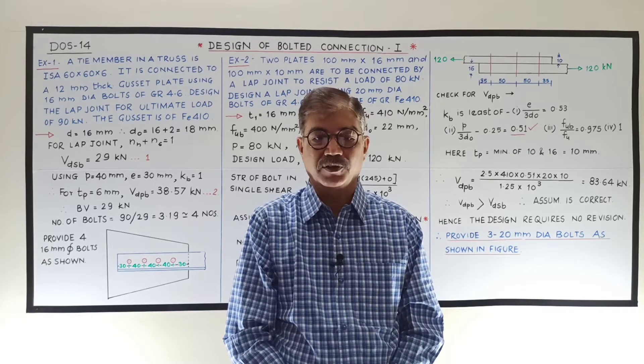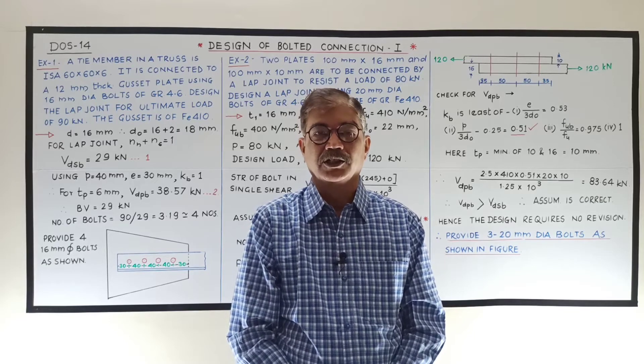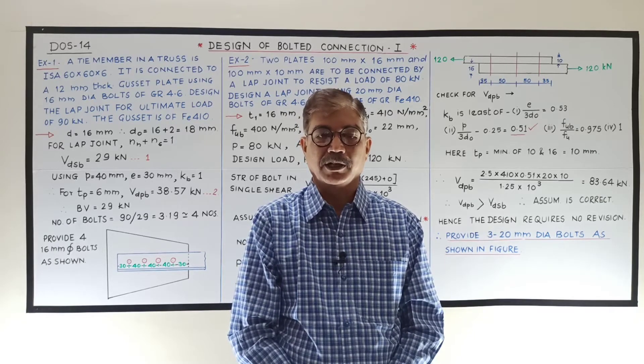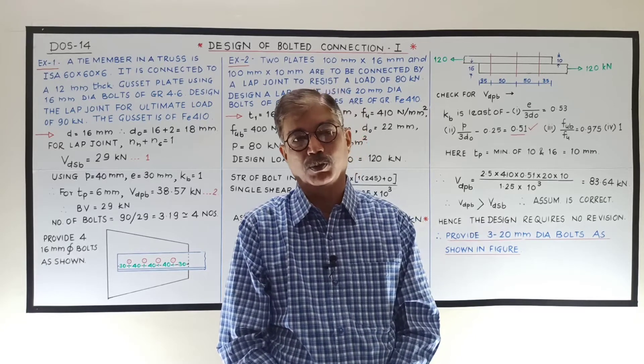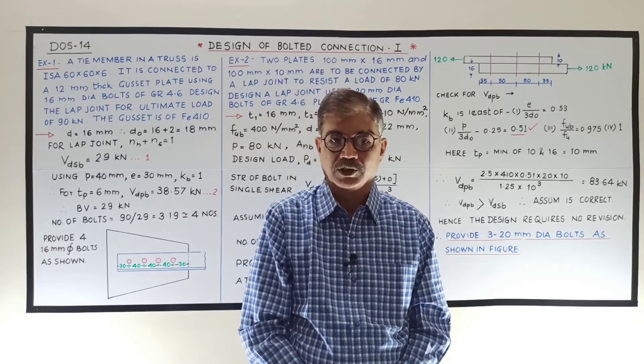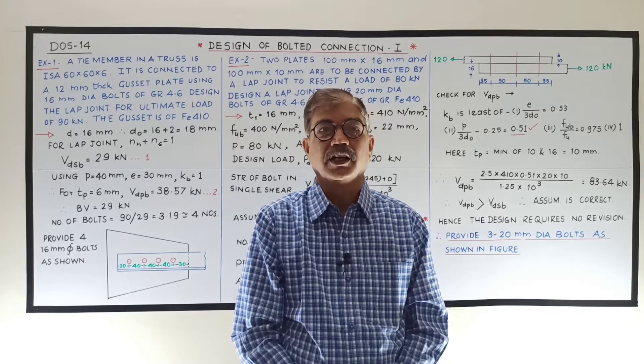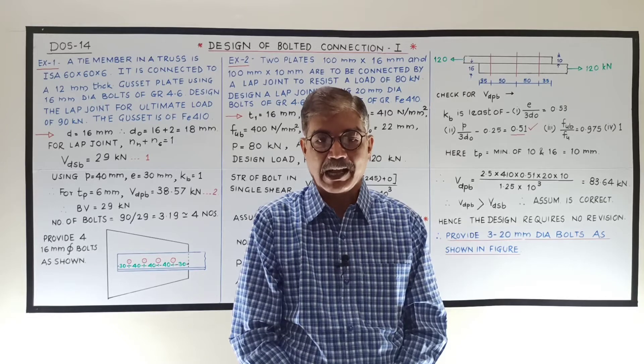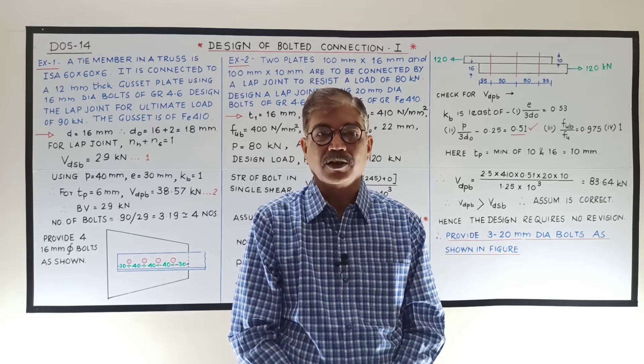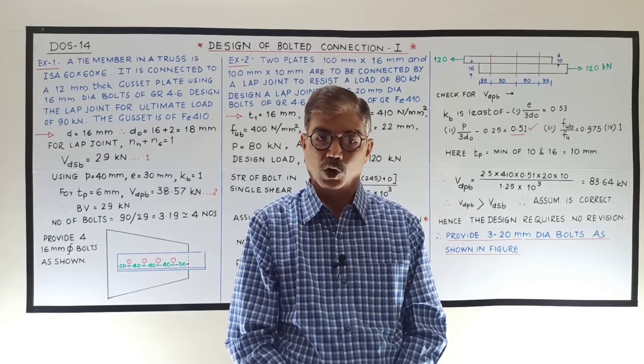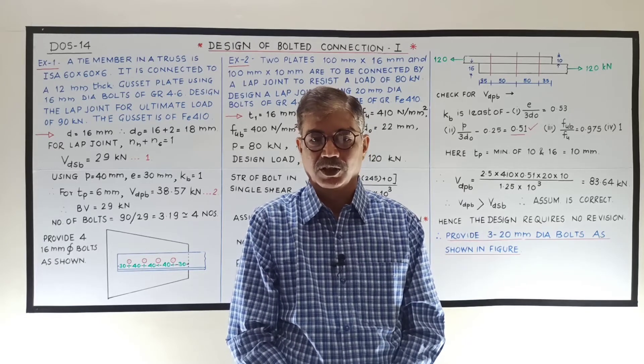What are the steps in the design? First step, select suitable diameter of bolt and calculate its bolt value. Second one, calculate the number of bolts required as factored load to be resisted by the connection divided by bolt value.